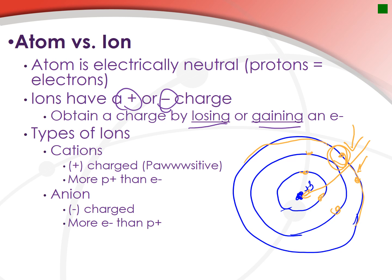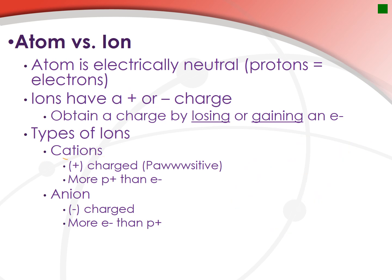There are two types of ions. The first is a cation — a positively charged ion. How do you get a positive ion? You have more protons than electrons. An anion, on the other hand, is a negative ion. How do you become an anion? You have more electrons than protons.